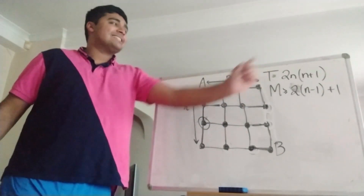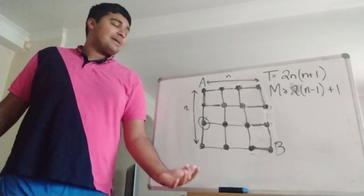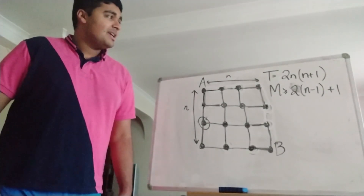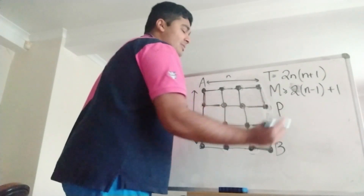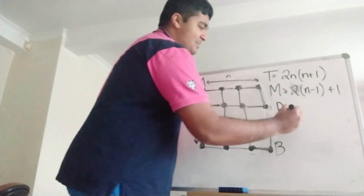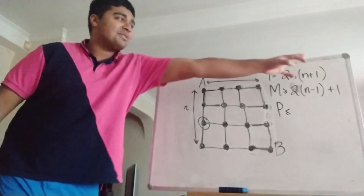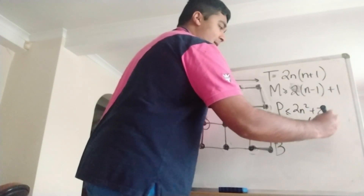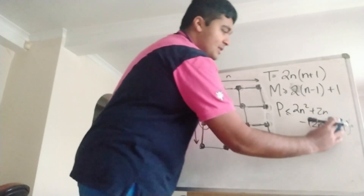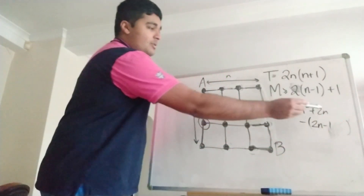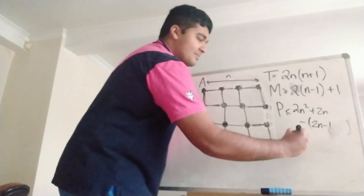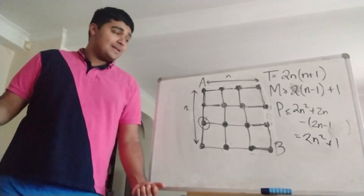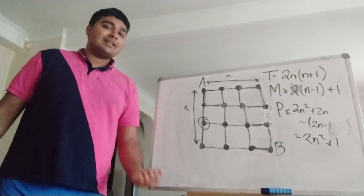Our total number of edges T is 2n(n+1), and the number of edges missing from any path must be at least 2n−1. So the maximum number of edges in our path is at most 2n(n+1) − (2n−1) = 2n²+2n − 2n+1 = 2n²+1. Therefore, any path from A to B that doesn't repeat an edge must have at most 2n²+1 edges.